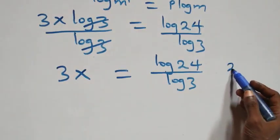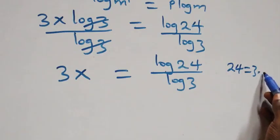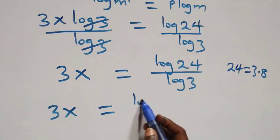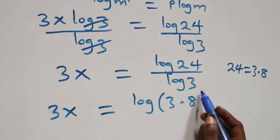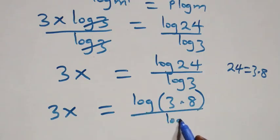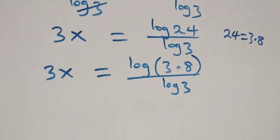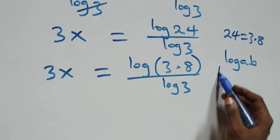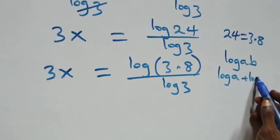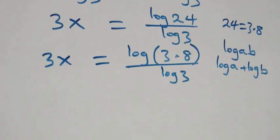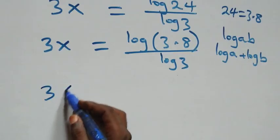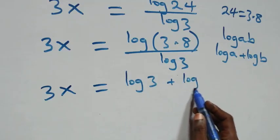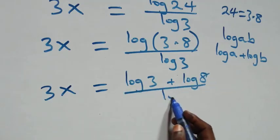From here, we have 3x equals to log(3 times 8) over log 3. This follows from the product rule of log: when we have log(a times b), we can write it as log a plus log b. So what we have becomes 3x equals to (log 3 plus log 8) over log 3.